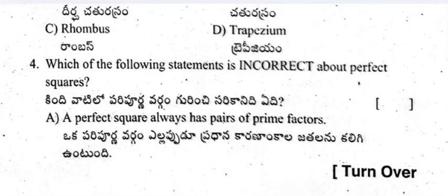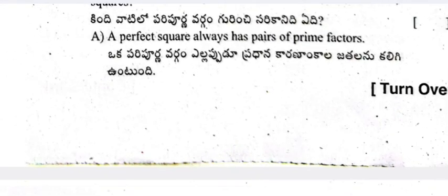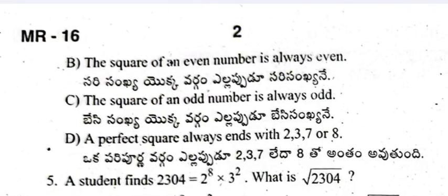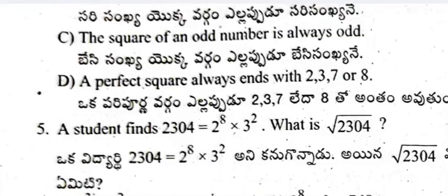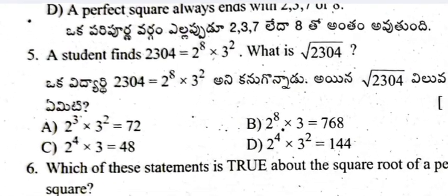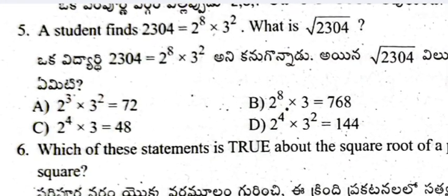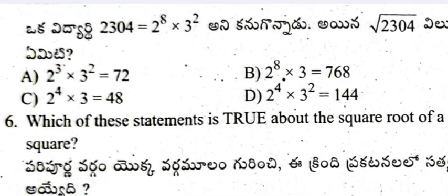Question 4: Which of the following statements is incorrect about perfect squares? A: A perfect square always has pairs of prime factors. B: The square of an even number is always even. C: The square of an odd number is always odd. D: A perfect square always ends with 2, 3, 7, or 8. Question 5: A student finds that 230004 equals 2 to the power of 82 times 3 squared — what is the square root of 230004?